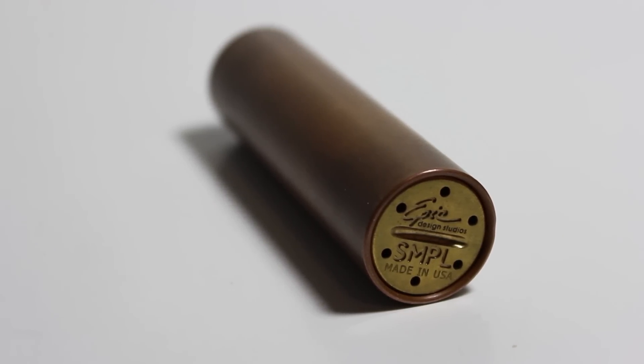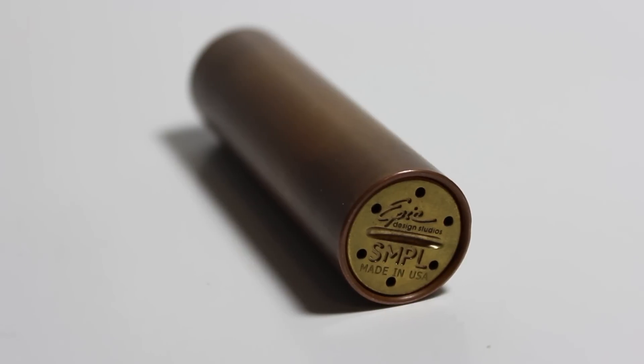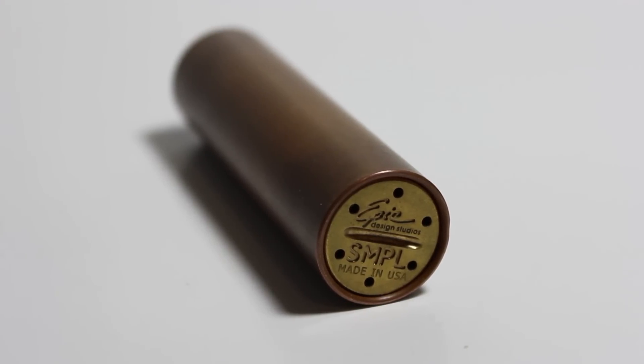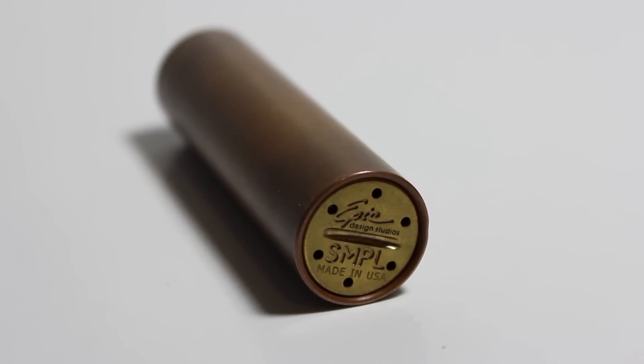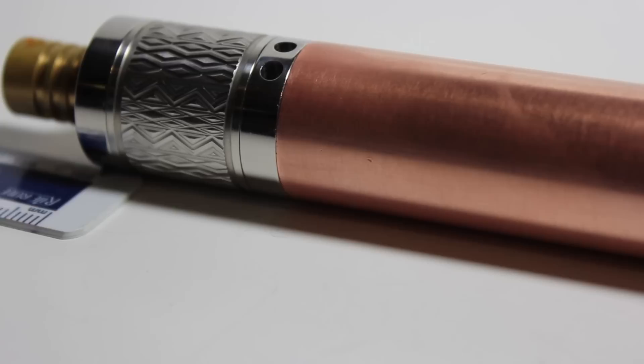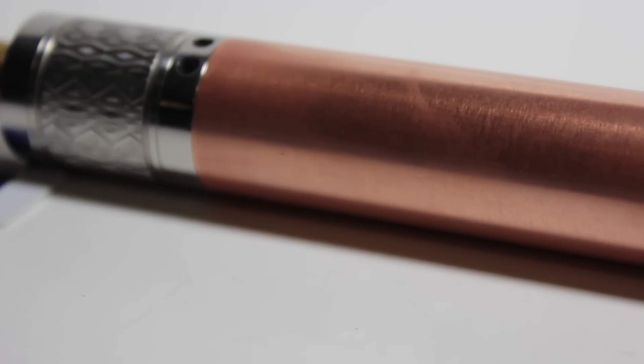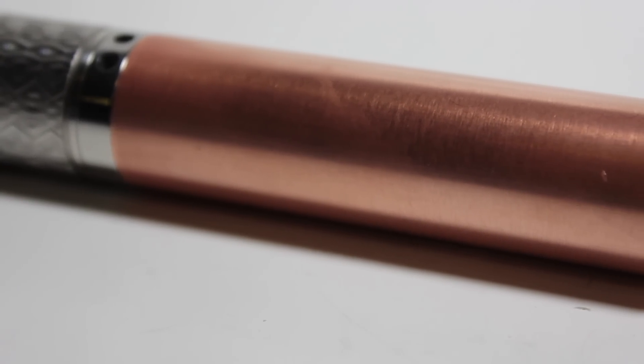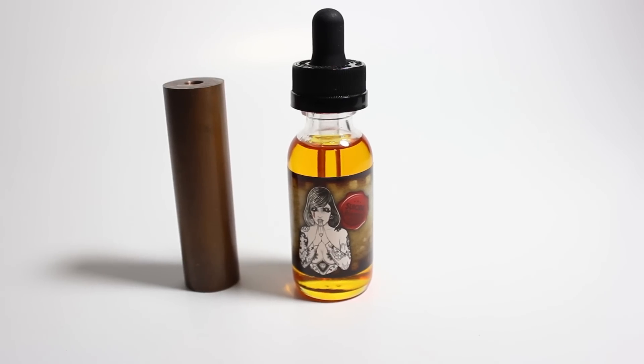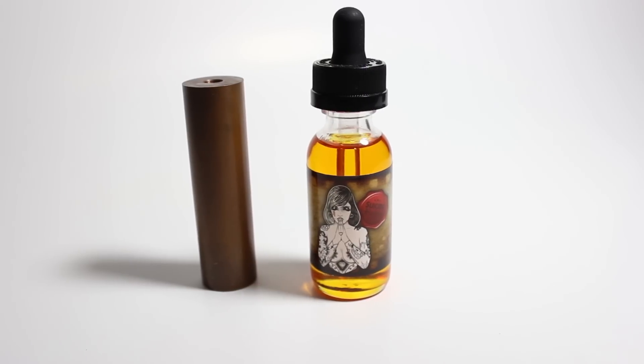It has a smooth copper tube with no engravings and a bottom fired button with the engravings Epic Design Studios and Simple, made in the USA. I personally love the way this looks. It is 22mm so all your 22mm atomizers sit flush and match stunningly. And the size of this is compact, coming out to only 78.5mm.